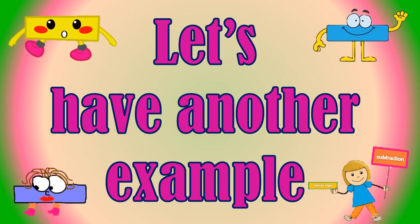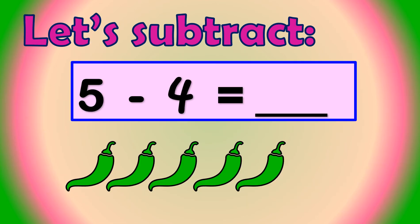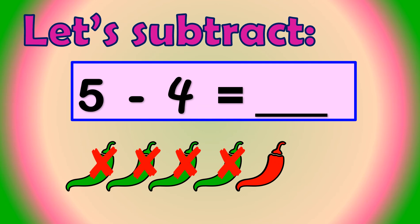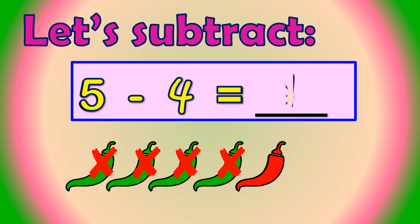Let's have another example. Let's subtract 5 minus 4. We take away 4: 1, 2, 3, 4. Let's count how many chilis are left: 1. 1 chili. So, 5 minus 4 equals 1.